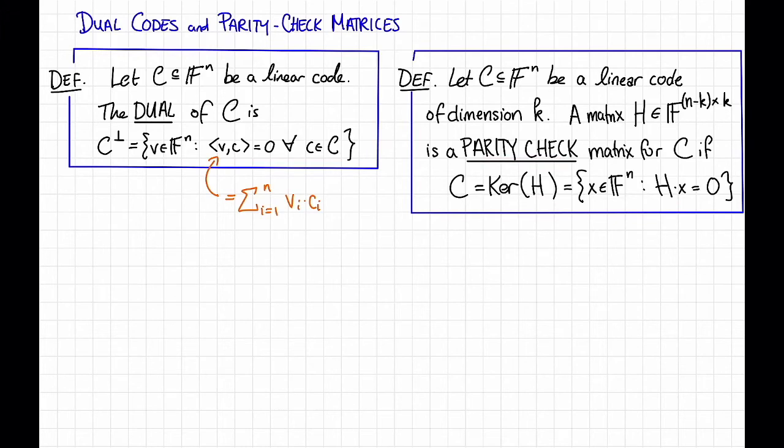So the picture looks like this. H is a short and fat matrix, which is (n minus k) by n. And it has the property that whenever we multiply it by a codeword of C, we should get zero.